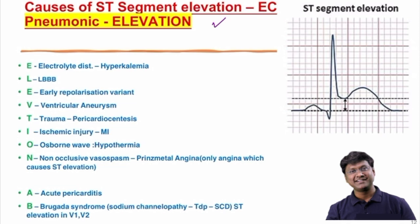I will tell you all the conditions using the mnemonic ELEVATION. E stands for electrolyte disturbances like hyperkalemia — in hyperkalemia, the important ECG finding is tall tented T waves. L stands for left bundle branch block, which also shows a wide QRS complex. E stands for early repolarization variant, which is a normal variant.